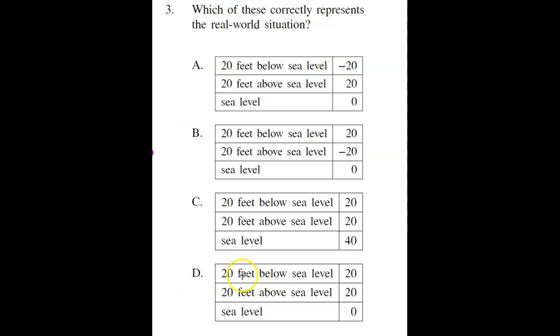So at the bottom here it says 20 feet below sea level. Below would mean negative, and this isn't a negative, so we know it's not this. Above sea level is a positive, and you won't always see the plus sign, so that's okay. Sea level is 0. That's the starting point.